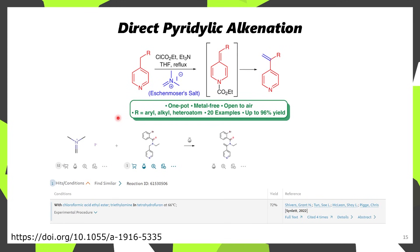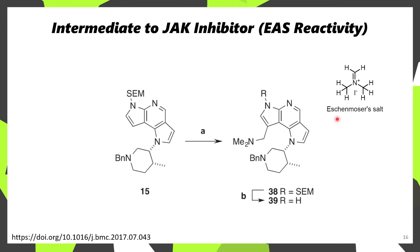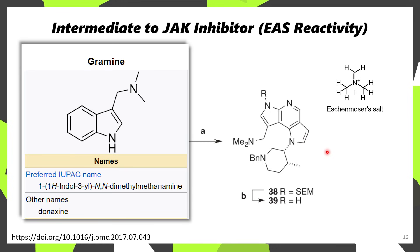Another application of Eschenmoser's salt is that if you first acylate a pyridine—for instance with ethyl chloroformate—it's possible to increase the acidity of the heterobenzylic position, also known as the pyridilic position, creating a good nucleophile able to attack Eschenmoser's salt. This undergoes elimination to afford the corresponding alkene. It's also possible to use Eschenmoser's salt for electrophilic aromatic substitution: a derivative of indole was selectively reacted at the 3-position of a semi-protected indole, where a gramine intermediate was prepared and pushed forward as a candidate JAK inhibitor.